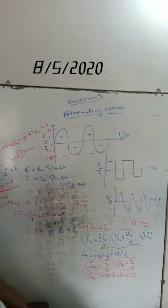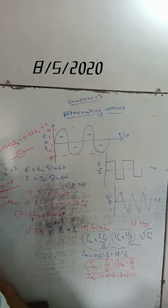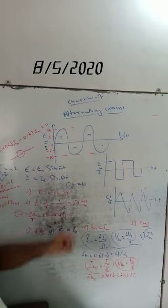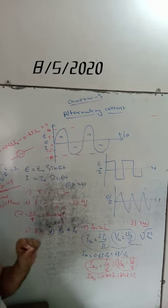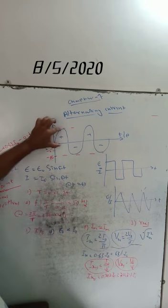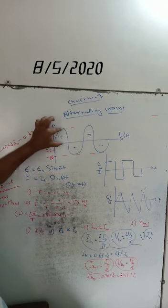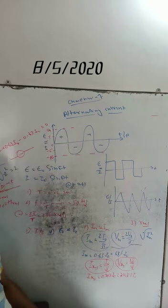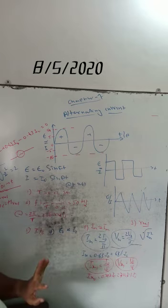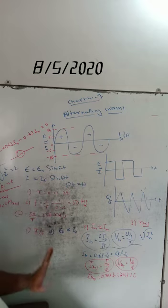Next, peak value of AC: the maximum value of induced EMF or current in each half cycle is called the peak value or amplitude value of AC. For example, the maximum value is +10 or −10. This is the peak value in each half cycle. I₀ and ε₀ are the peak values of current and EMF respectively.